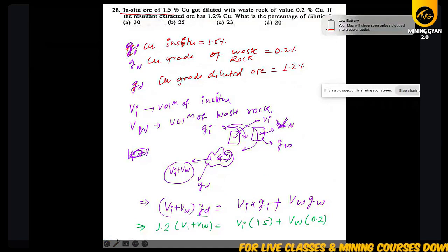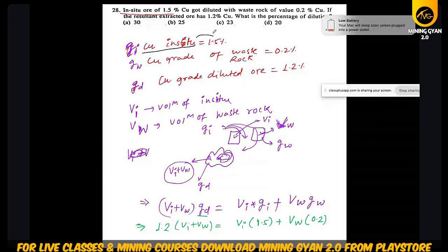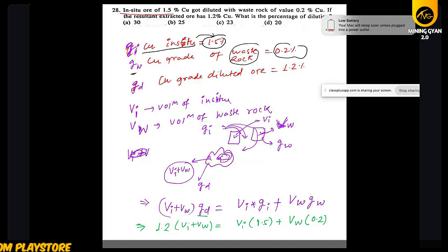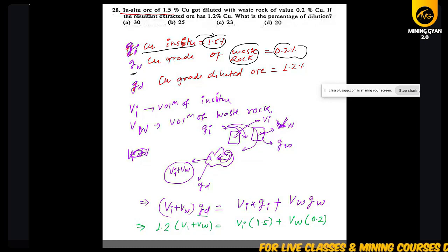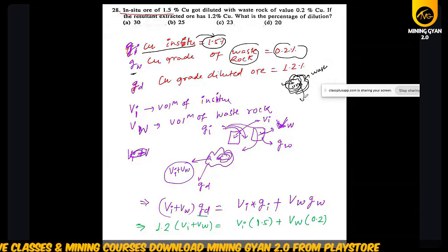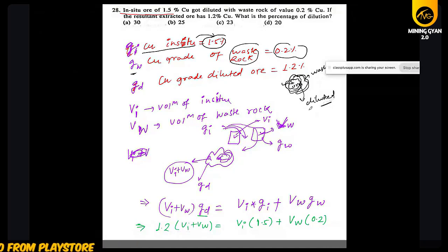What is in-situ? In-situ means the ore itself — its grade is 1.5%. Waste rock means the overburden or surrounding rock, with grade 0.2%. When you try to extract your ore, the nearby waste rock mixes with it — that is dilution.